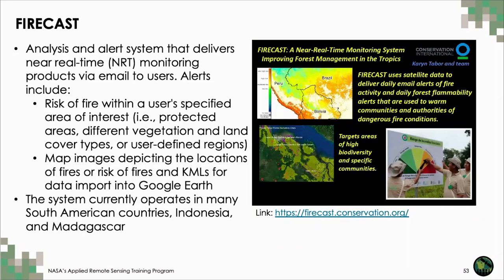FireCast is an international tool that acts as an analysis and alert system for delivering near real-time monitoring products via email. These alerts include risk of fire within a user-specified area of interest such as protected areas, specific land cover areas, or user-defined regions. Alerts also include map images depicting the locations of fires or risk of fires. The system currently only operates in countries within South America, Indonesia, and Madagascar — but if that applies to you, this could be a very useful tool for getting notifications about fire risk.